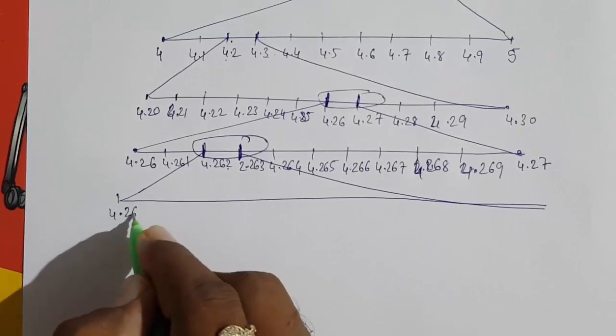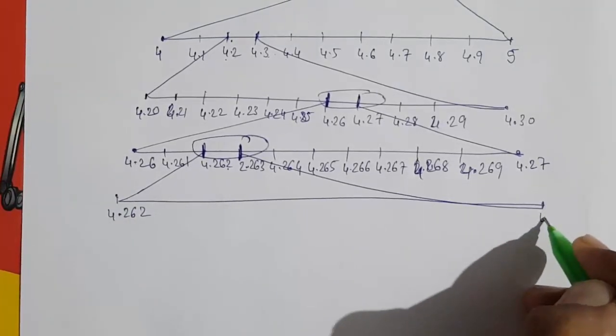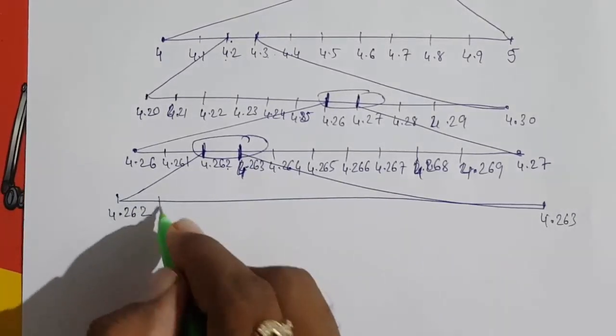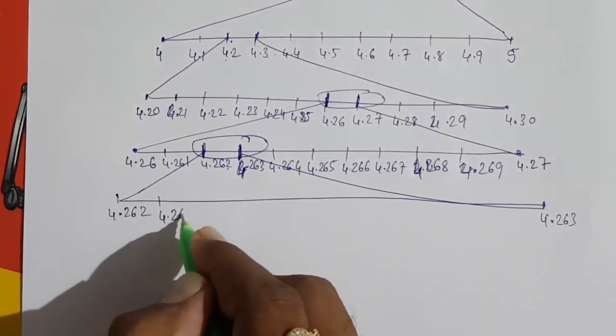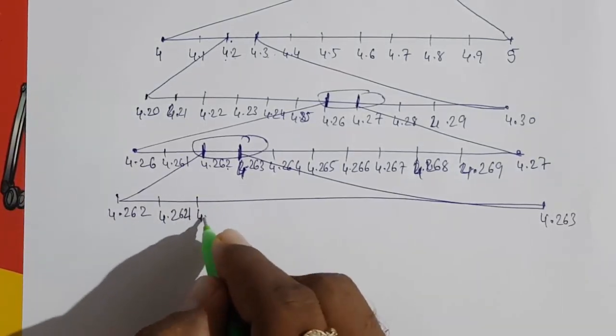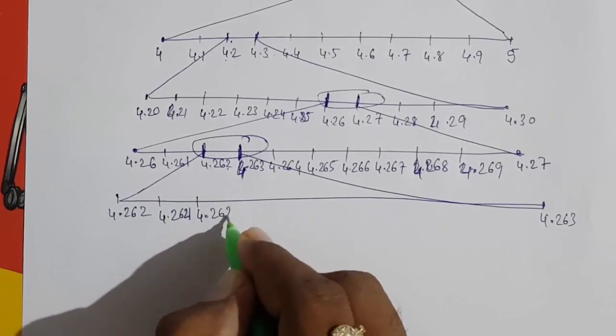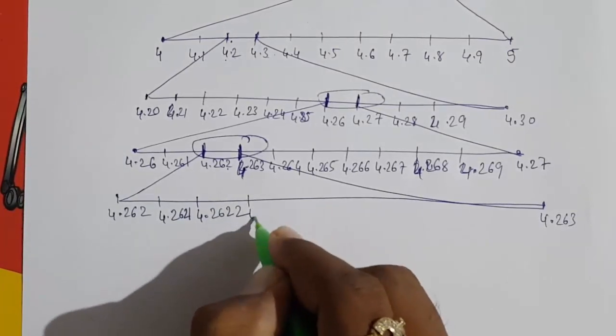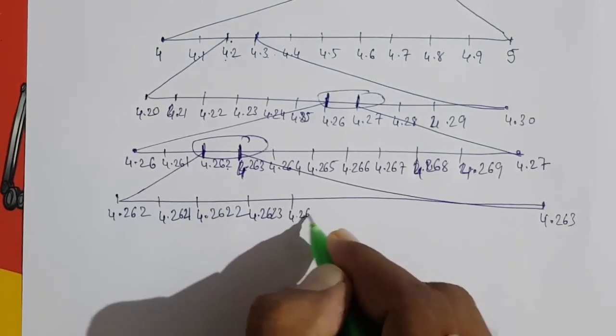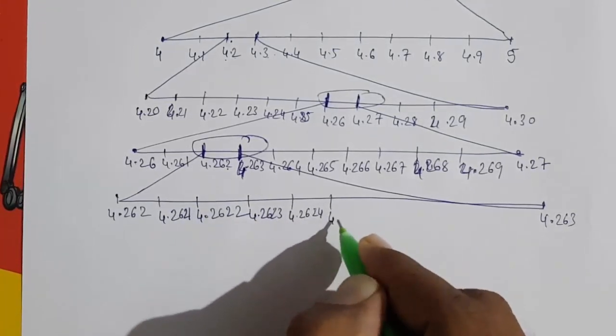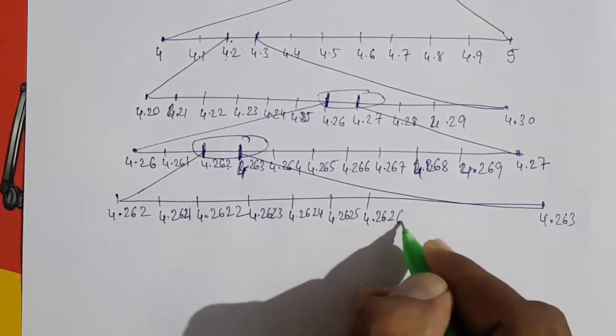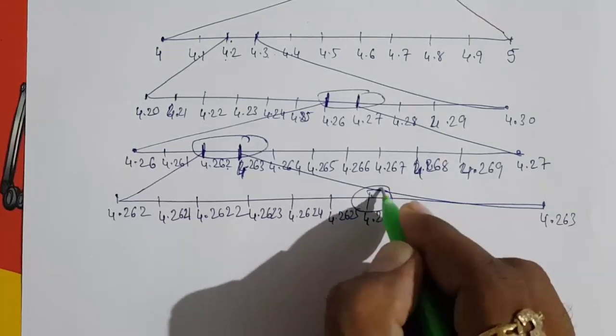Now 4.2621, 4.2622, 4.2623, 4.2624, 4.2625, 4.2626 – so this is our real number, 4.2626.